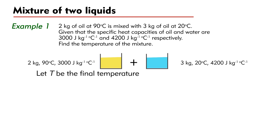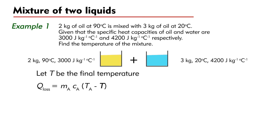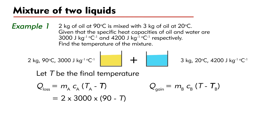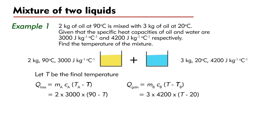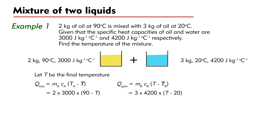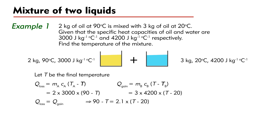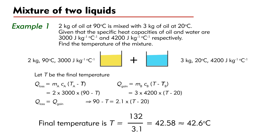Let T be the final temperature. Heat loss by oil is Q_loss equal to MA times CA times (TA minus T) equal to 2 times 3000 times (90 minus T). Heat gain by water is Q_gain equal to MB times CB times (T minus TB) equal to 3 times 4200 times (T minus 20). By conservation of energy, Q_loss equals Q_gain, we have (90 minus T) equal to 2.1 times (T minus 20). The final temperature is T equal to 132 divided by 3.1, equal to 42.58, or 42.6 degrees Celsius.